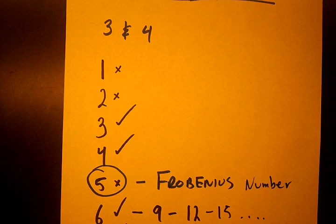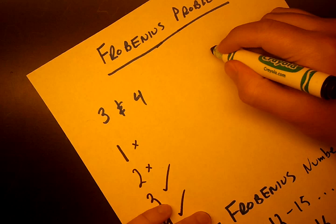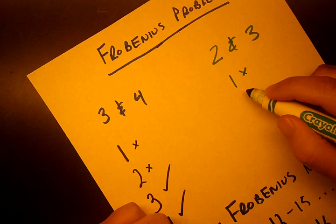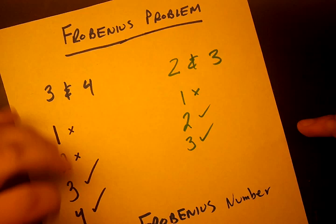We can similarly do it again. Let's use a more simpler case even. Let's choose the numbers 2 and 3. Can we form 1? No. Can we form 2? Yeah. Can we form 3? Yeah. And in this one, we're done.